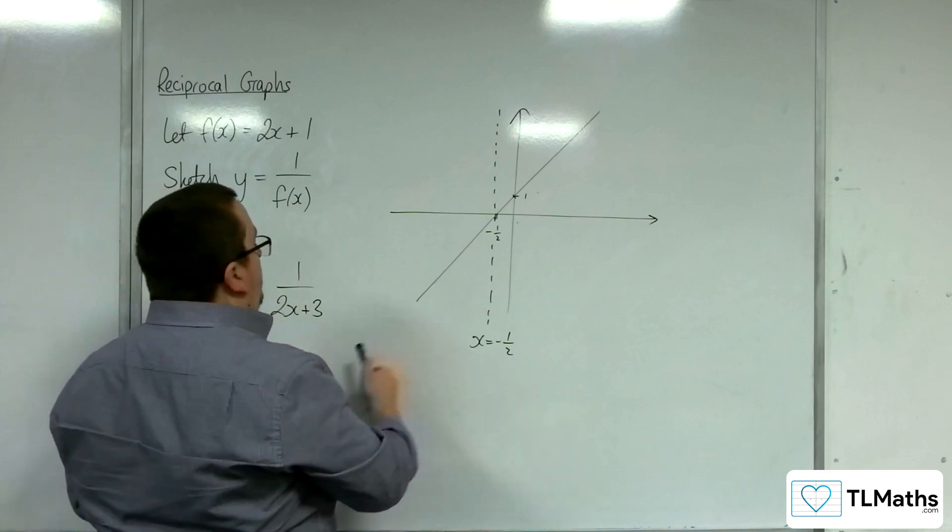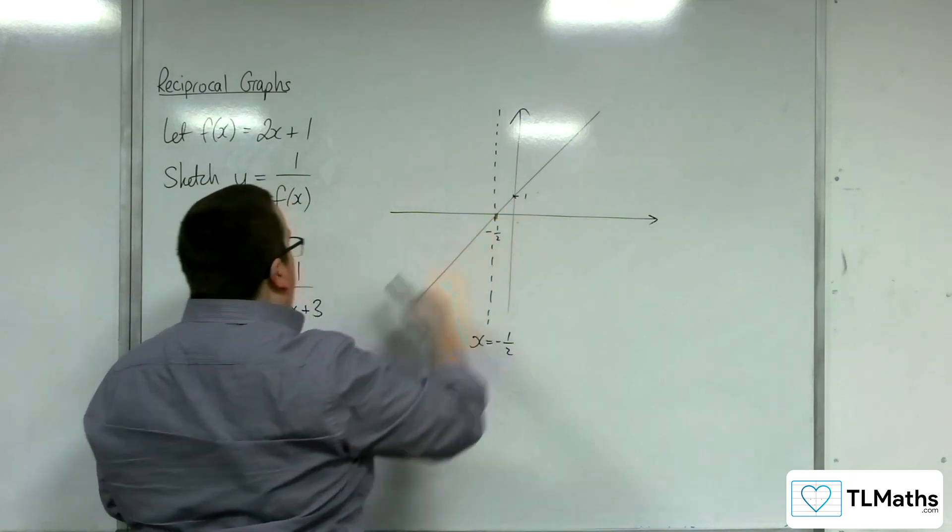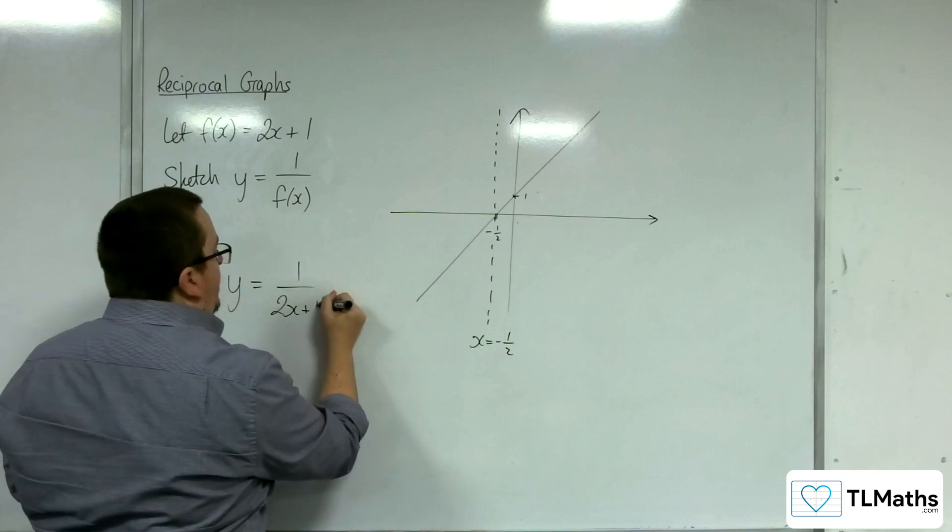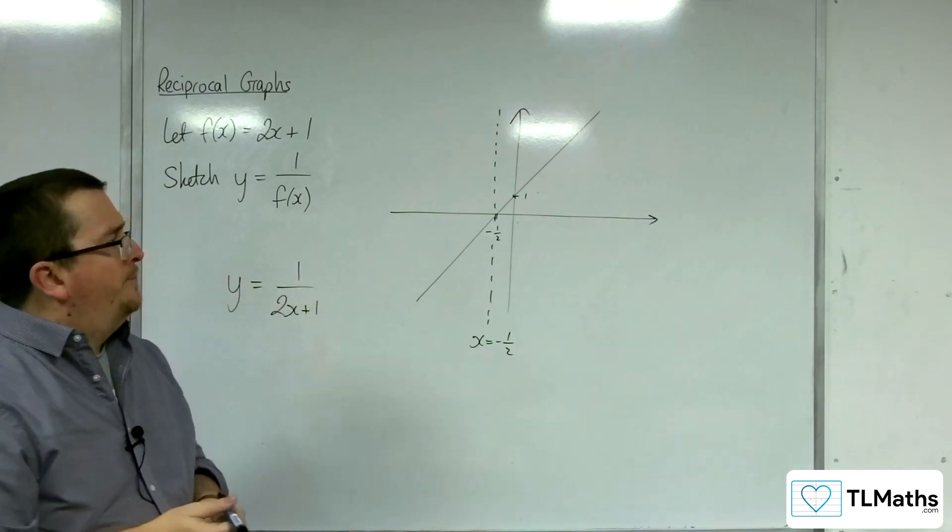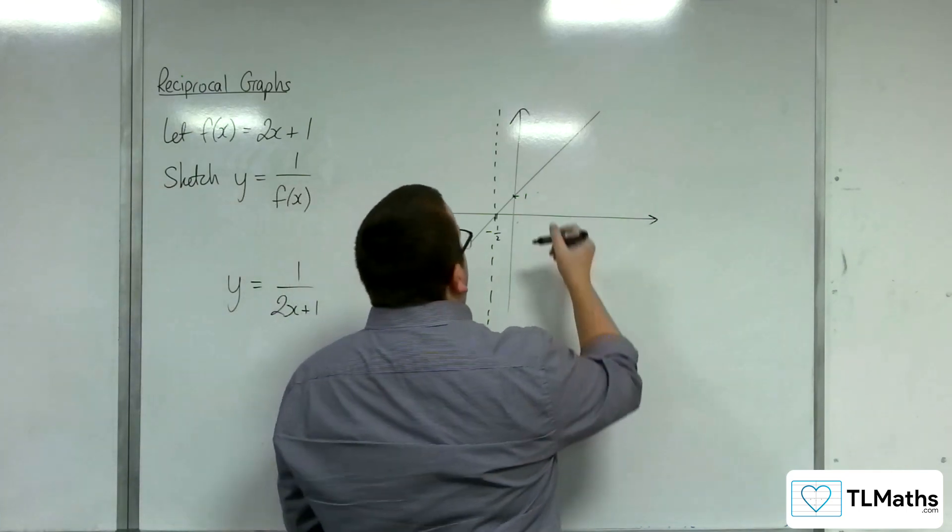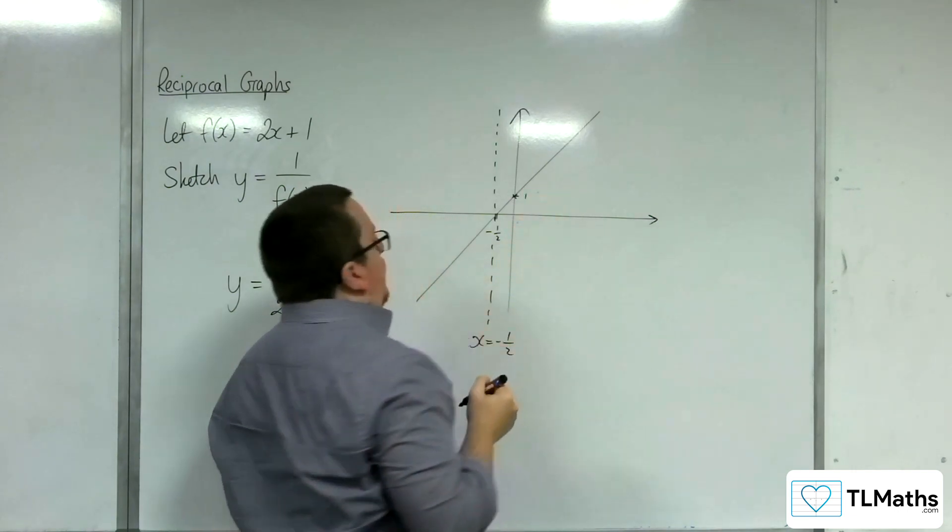So it'll always be 1 over the y-intercept as to where my new function will be crossing the y-axis. So I know that it's going to be crossing through that point.